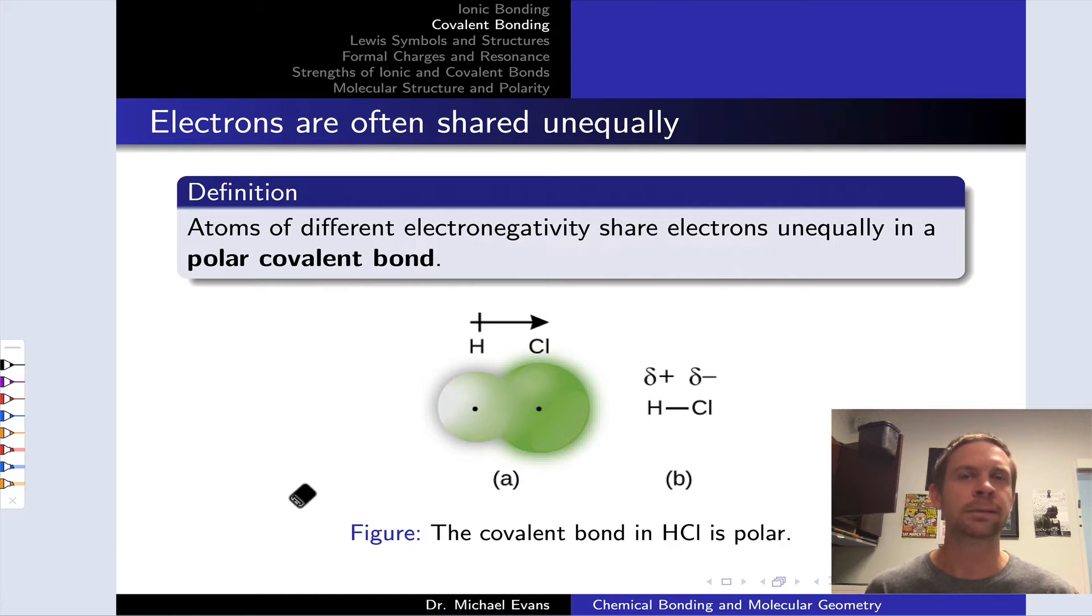Electrons are spending more time or exist in higher density near one of the nuclei than the other. This is called a polar covalent bond when the two atoms involved have relatively different electronegativity, so different extents of attracting electrons to themselves. The hydrogen-chlorine bond, HCl, is a classic example of this.